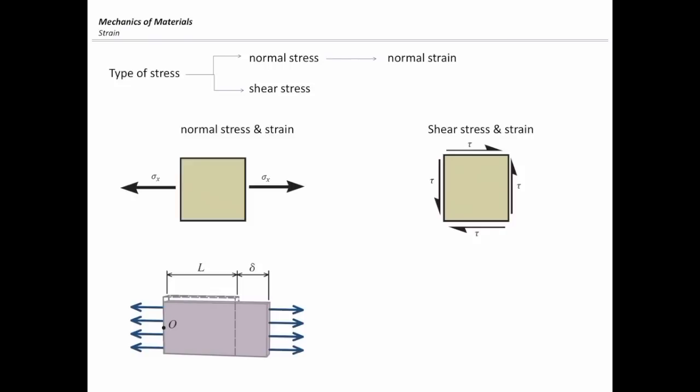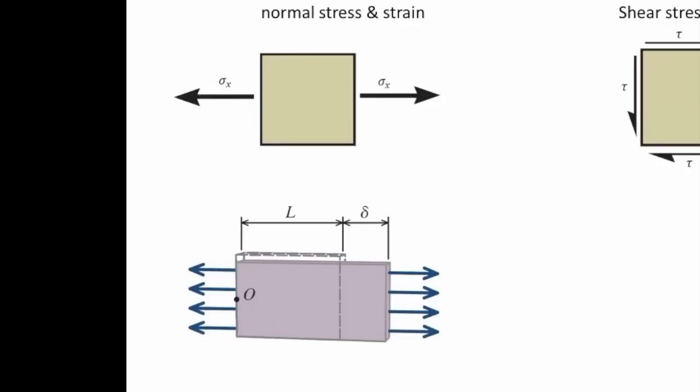Remember, strain is the intensity of internal deformation. What kind of deformation do you expect to see if you subject this plate to stress in the horizontal direction? It stretches. So let's consider the total deformation — the total change in the length as delta — and let's call the initial length of that plate as L. We define normal strain as the ratio between the change in the length to the original length of the element.